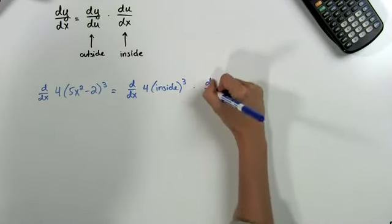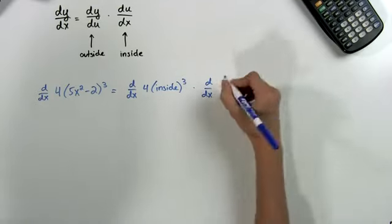Next, we multiply that by the derivative of the inside function, which is 5x squared minus 2.